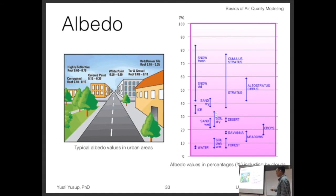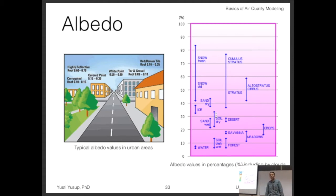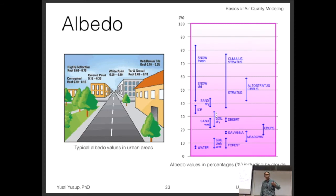Albedo values expressed as percentages, including by clouds, range from 0 to 100 percent. Fresh snow goes from 0.4 to 0.9 and so on. These are the basic albedo parameters you need to input into the model — they will ask you for the albedo values of the surface, and you need to choose the proper albedo values for your area based on these reference values.